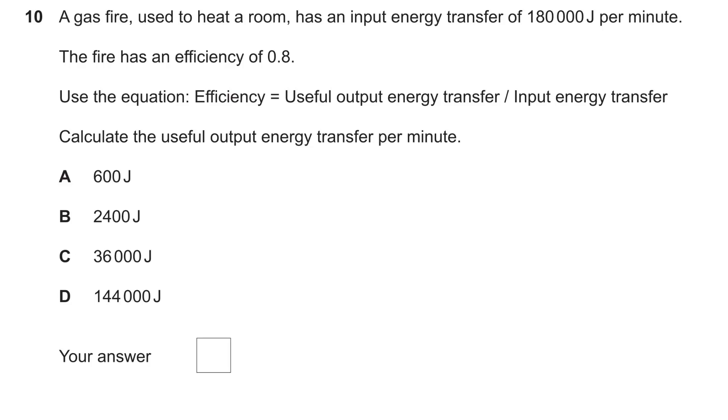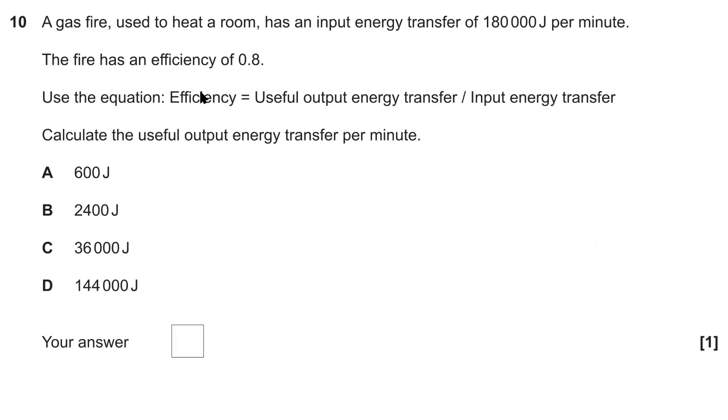First one: we have a gas fire used to heat up a room, and we're given the input energy transfer being 180,000 joules per minute. Use the efficiency equation—we're given the efficiency here—to calculate the useful output energy transfer per minute.